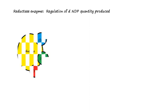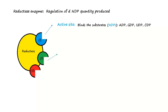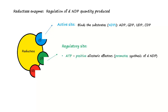The reductase enzyme is an allosteric enzyme. Regulation of the quantity of nucleotides produced involves three types of sites in its structure. The first type is the active site, which binds the substrates — the ribonucleotides. The second type is the regulatory site, which represents the allosteric character of the reductase enzyme.